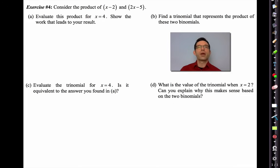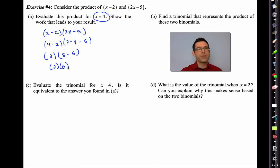Exercise 4. Consider the product of (x - 2) times (2x - 5). Evaluate this product for x equals 4. Show the work that leads to your result. So first, let's just put down the product. (x - 2) times (2x - 5). And it says evaluate the product for x equals 4. In other words, I'm going to put 4 in. (4 - 2) times (2 times 4 - 5). We just need to be careful here. 4 minus 2 is 2. 2 times 4 is 8 minus 5. And then I'll get 2 times 3. And it looks like the product's equal to 6. Because remember, that product will always depend on what x is.